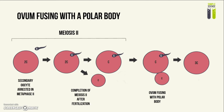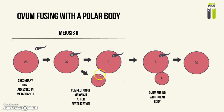Another cause would be the fusion of the ovum with a polar body. As you can see here, meiosis II is carried out normally. From the beginning there is a secondary oocyte with two sets of chromatids, and at the end the ovum has one set of chromatids and the polar body also has one set of chromatids. However, after that, these two normal cells fuse together, which then forms a triploid zygote again.